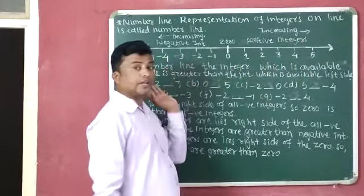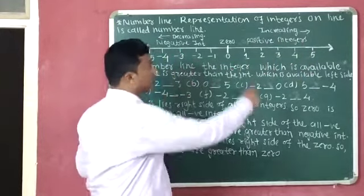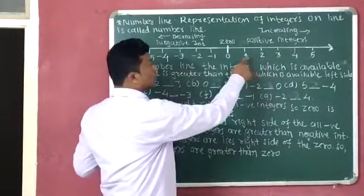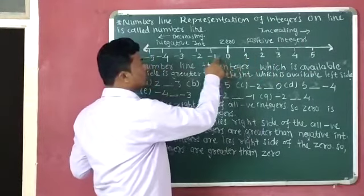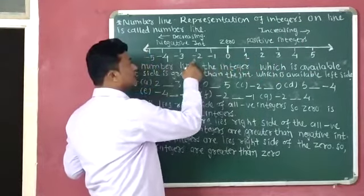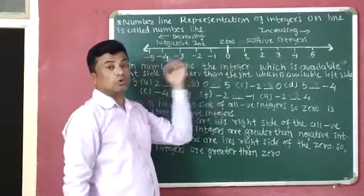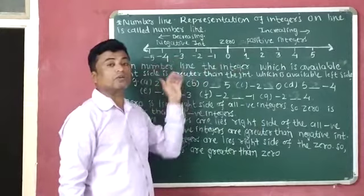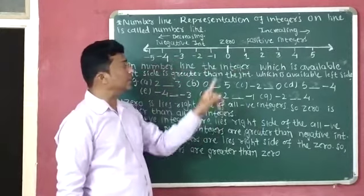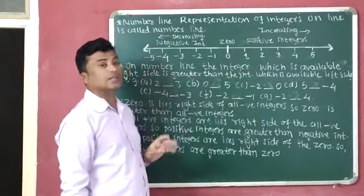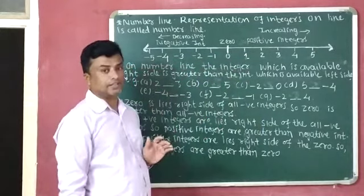And if you go left hand side of the number line — two, one, zero, minus one, minus two, minus three — then numbers are decreasing.